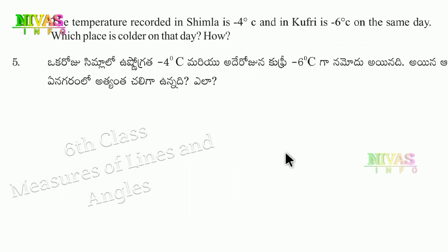The next question: the temperature recorded in Simla is minus 4 degrees Celsius and in Kufri is minus 6 degrees Celsius on the same day. Which place is colder on that day? We need to compare the two temperatures to determine which town is colder.